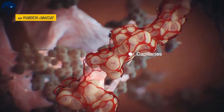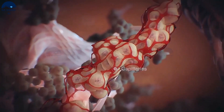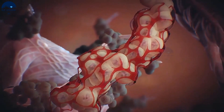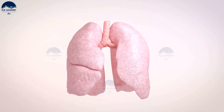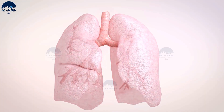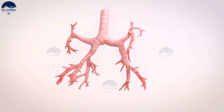The bronchi's walls are made of cartilage. The right bronchus is shorter, wider, and straighter than the left bronchus.